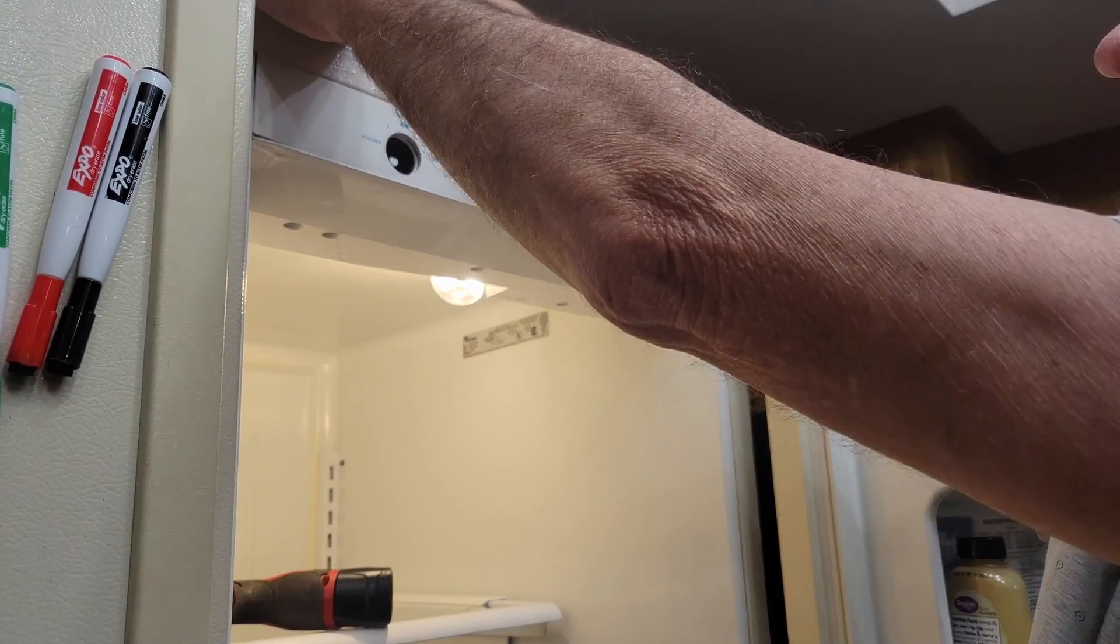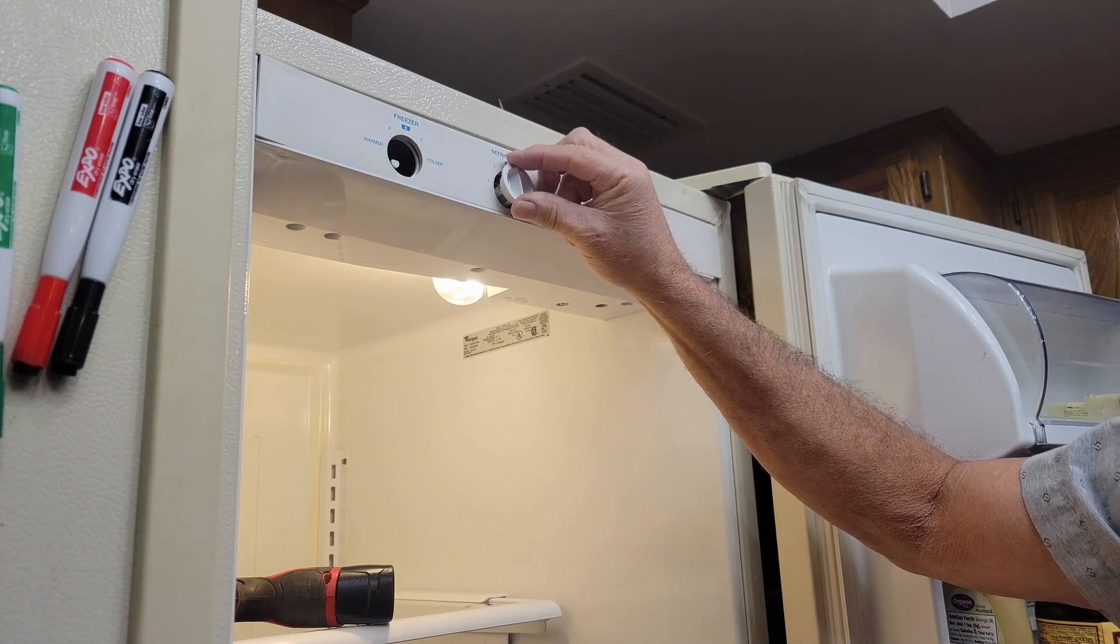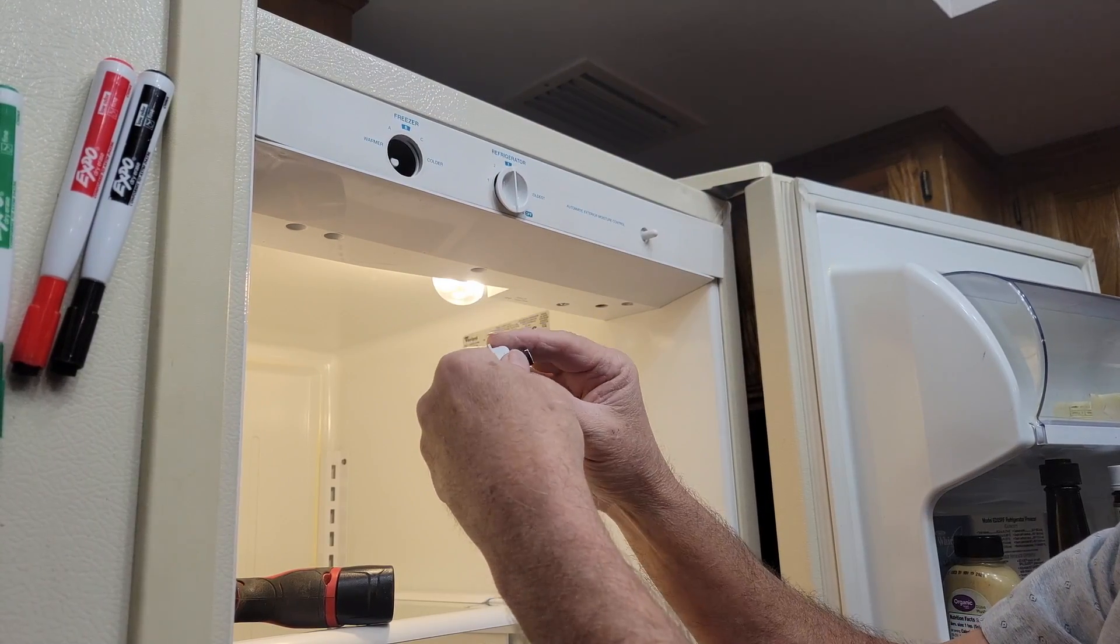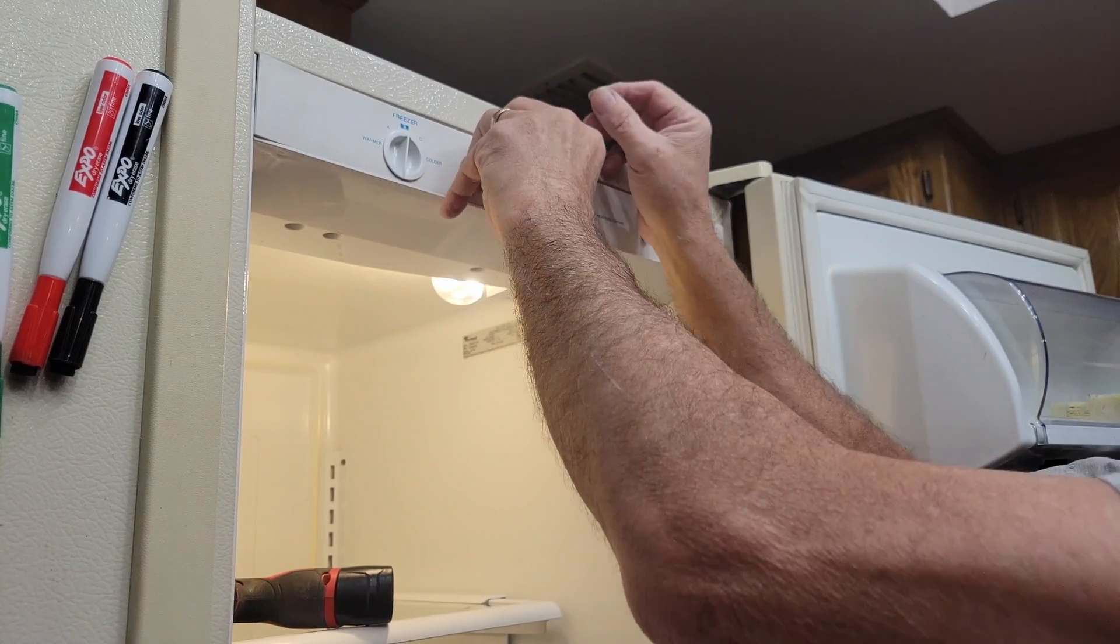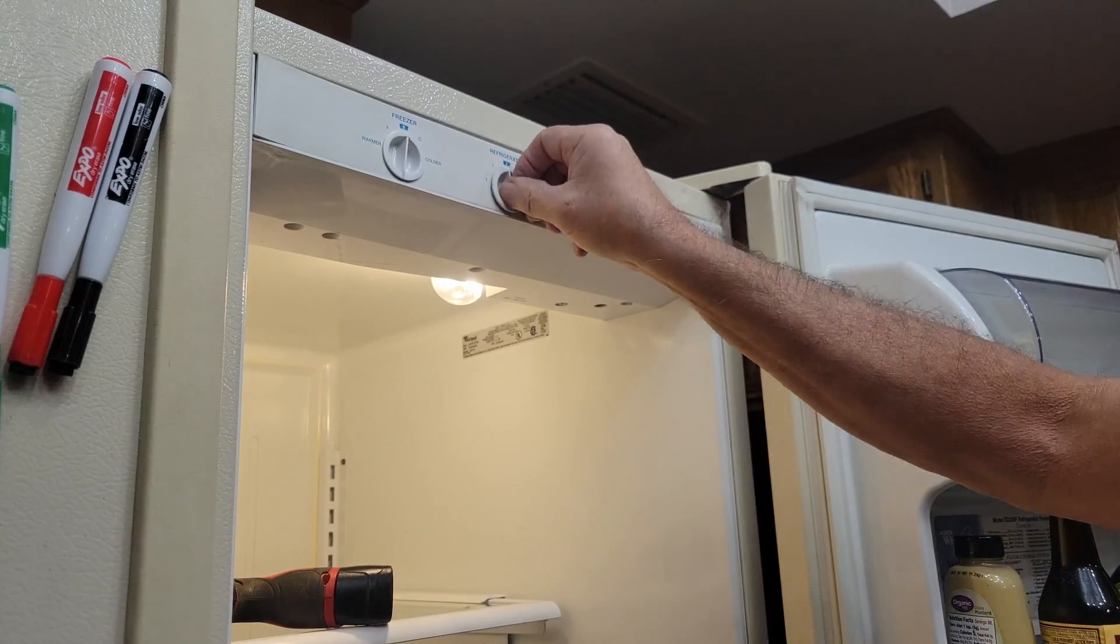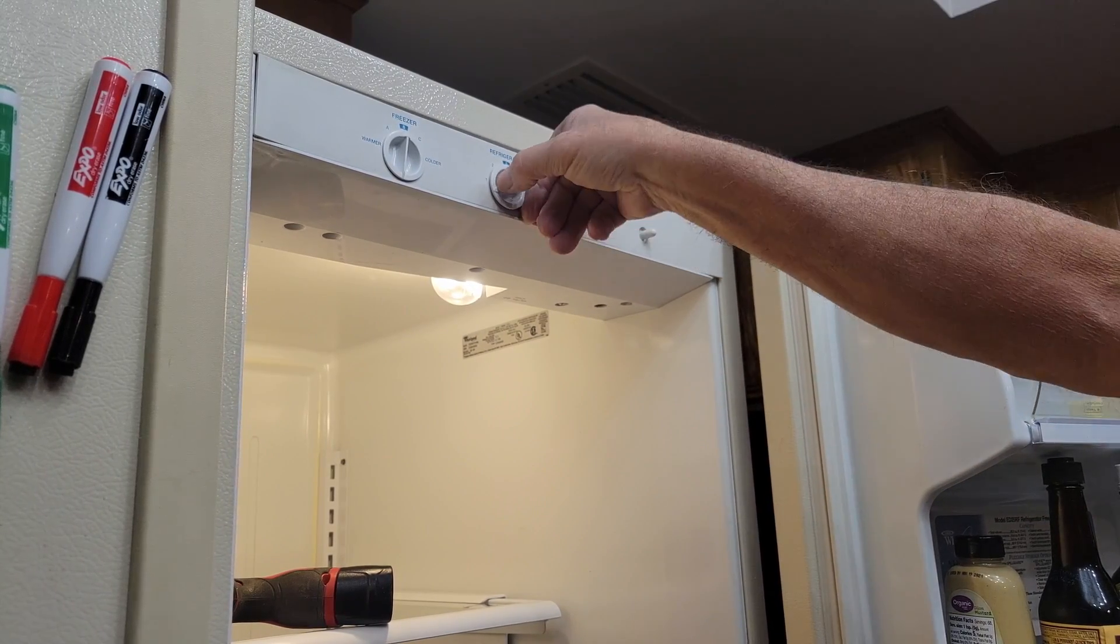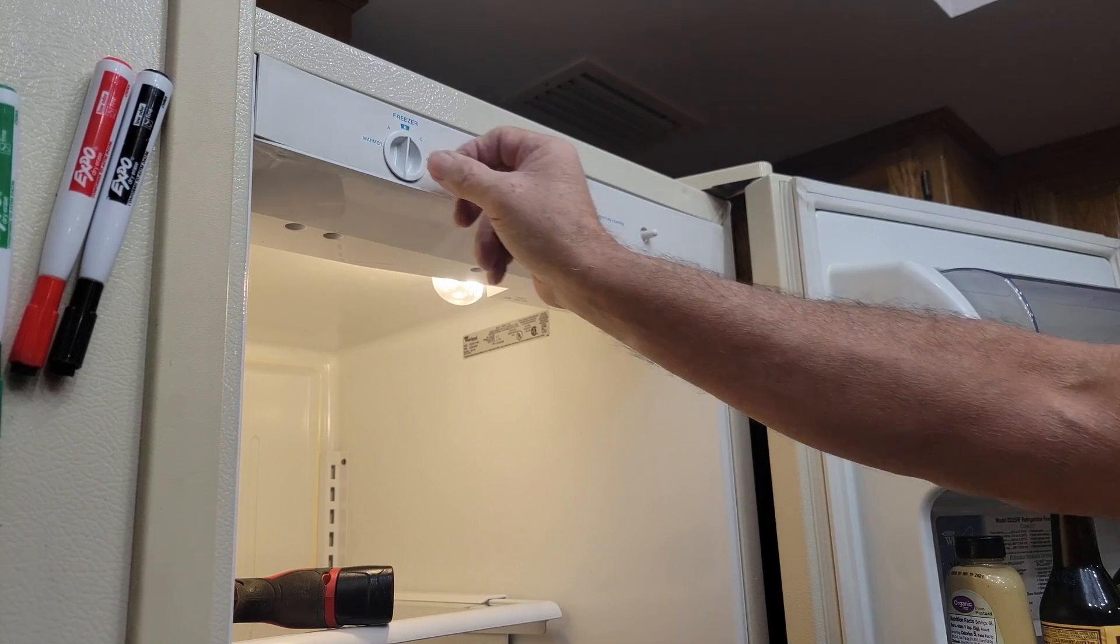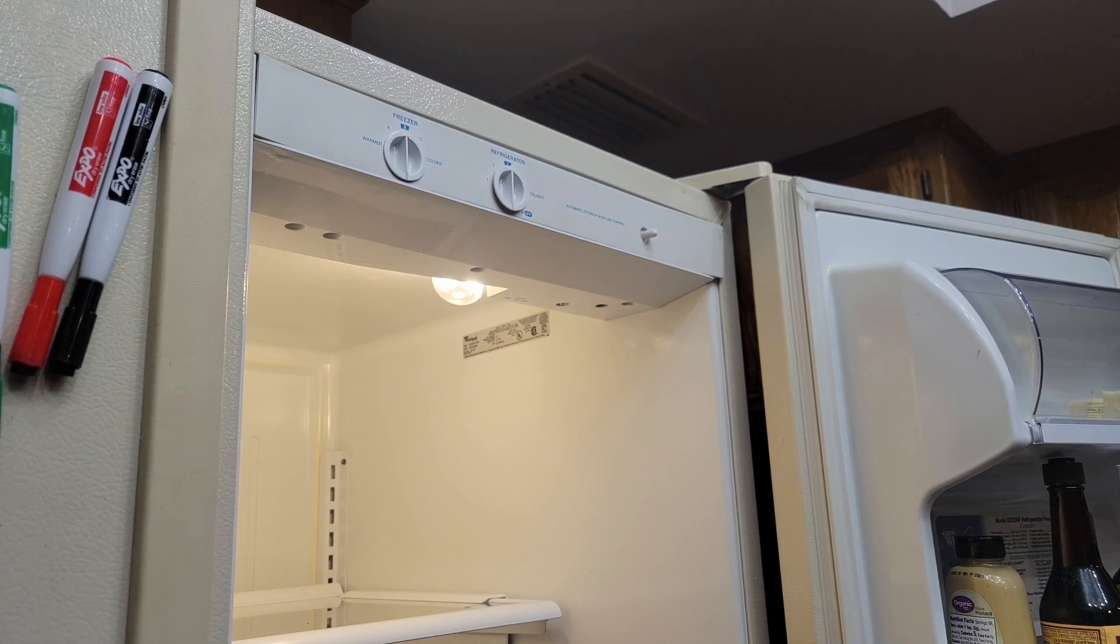And there you go, she's nice and tight. I'll put her knobs back on. There's the freezer knob, or the refrigerator knob. There's the freezer knob. And of course with a new refrigerator, you're probably going to have to adjust your temperature five or six times. I can hear it humming in the background, and I heard it go off. So we're going to set it right in the middle and we'll let it sit for a couple hours and see what the temperature is and see what we've got.